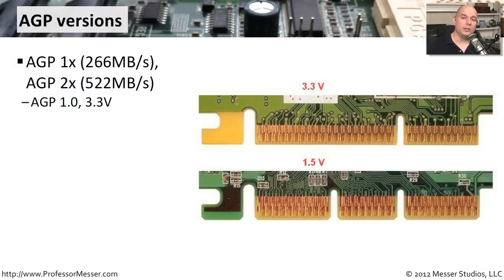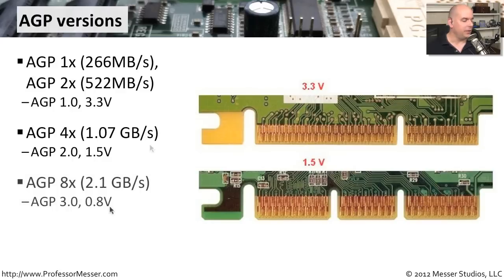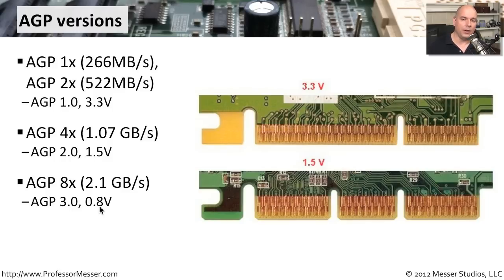As AGP matured, we got higher throughputs. The initial version 1.0, running at 3.3 volts, gave us AGP 1X and 2X speeds up to 522 megabytes per second. The next version 2.0 was a 1.5-volt version with 4X speed, allowing us to get 1.07 gigabytes per second. We then doubled it again with AGP 8X to 2.1 gigabytes per second. In version 3.0, the standard voltage dropped to 0.8 volts. As we went through the different versions, the bus voltage requirements dropped from 3.3 volts all the way down to 0.8 volts.